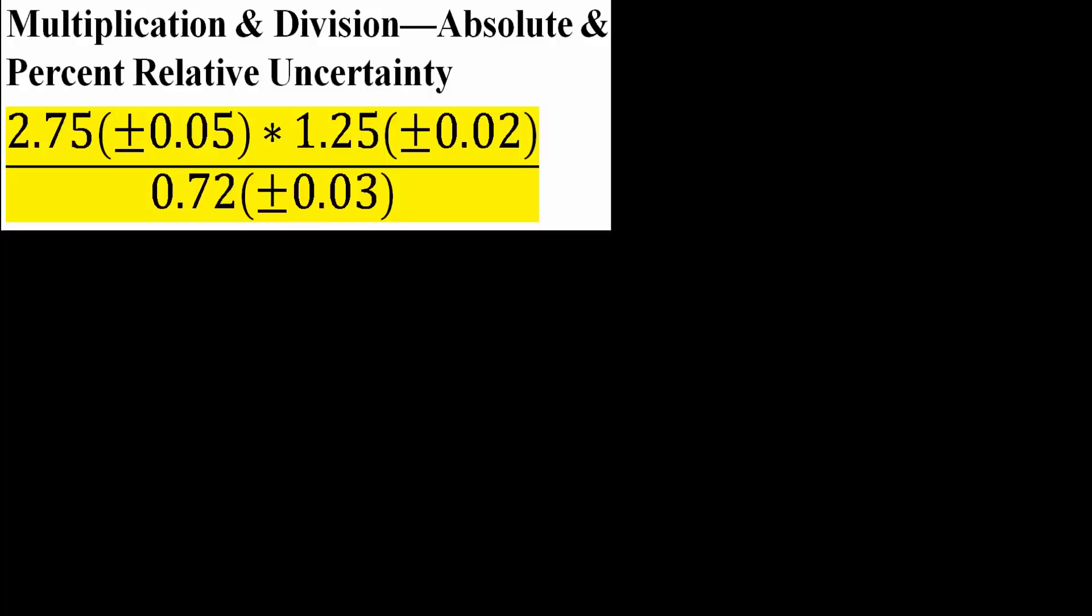In this video, we will get the absolute and percent relative uncertainty for problems that have multiplication and division only. So the first step that we would do for this type of problem is just multiply 2.75 times 1.25 divided by 0.72.